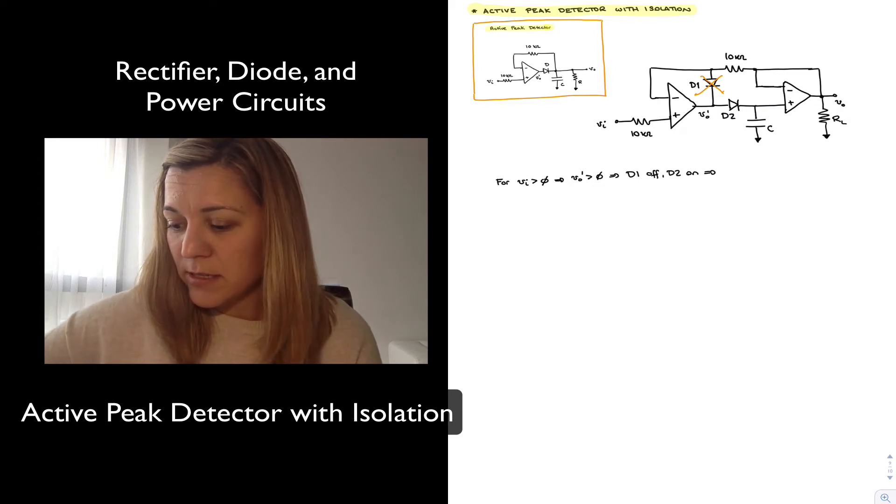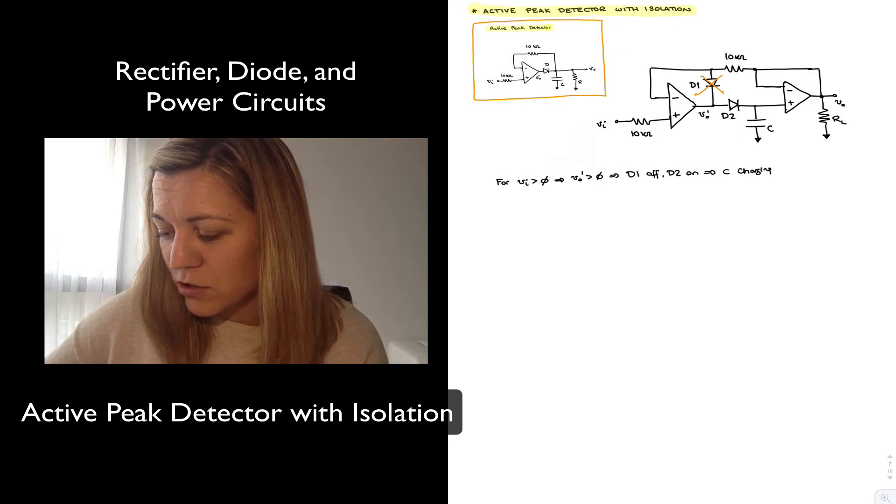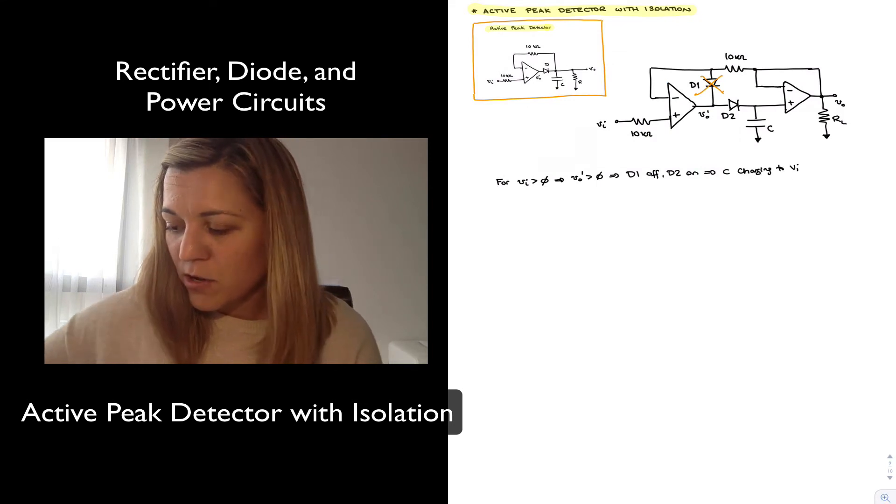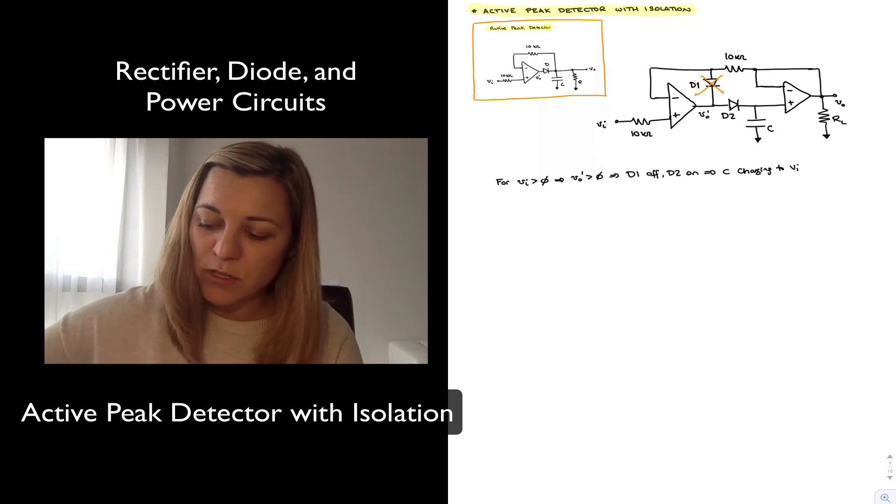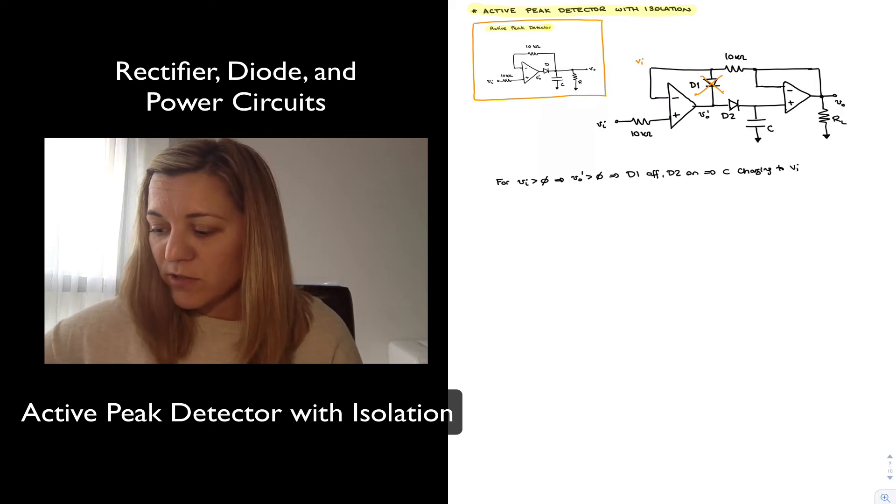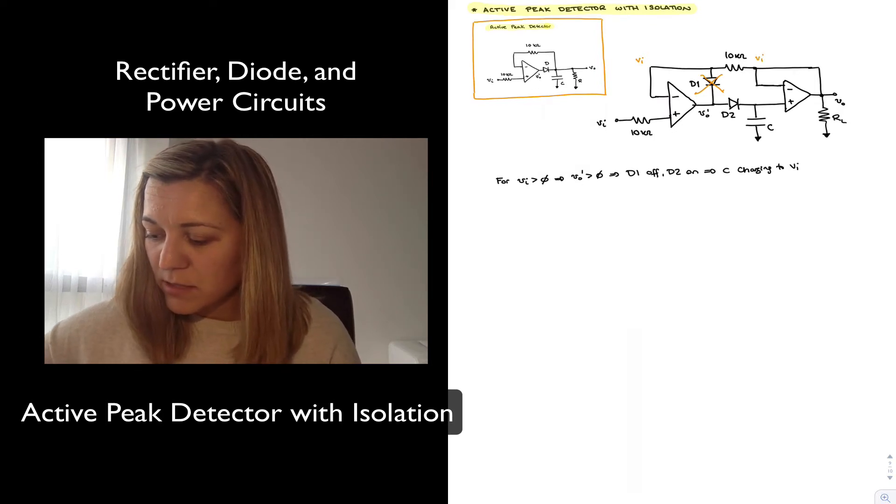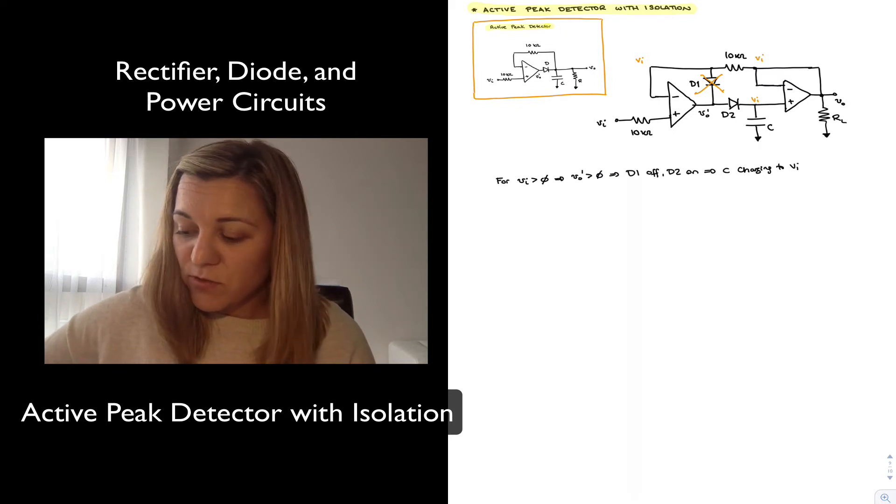And so what's going to happen is that C is going to be charging to Vin, because remember the negative input of that first op-amp is going to be feeding back into the negative input of the first op-amp. And so it's going to want to charge this value to Vin through that negative feedback operation, because that's the value I have on that other terminal. So if this terminal is sitting at Vin, then that means my capacitor is sitting at Vin, which means Vout prime is sitting at Vin plus 0.7 volts.